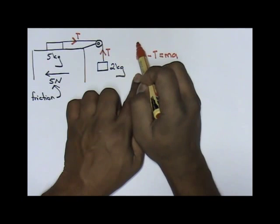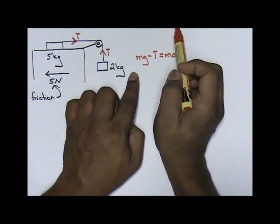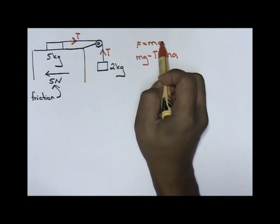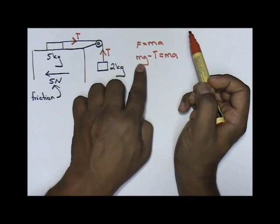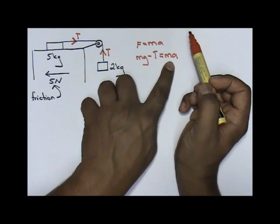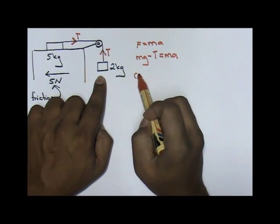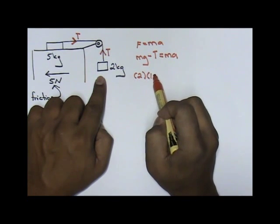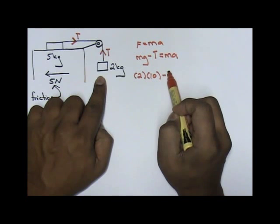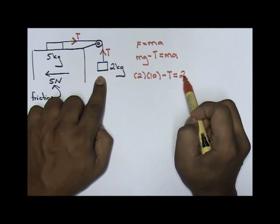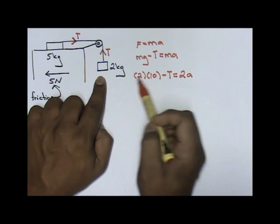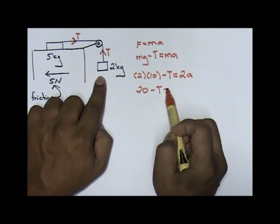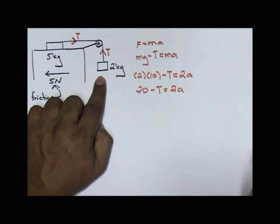Remember this formula, where you've taken it from: F equals ma. Everything is using F equals ma. So your F is mg minus T equals ma. Your m is 2 kilogram, your g is 10, minus tension equals 2a. Solving this, you'll get 20 minus T equals 2a.